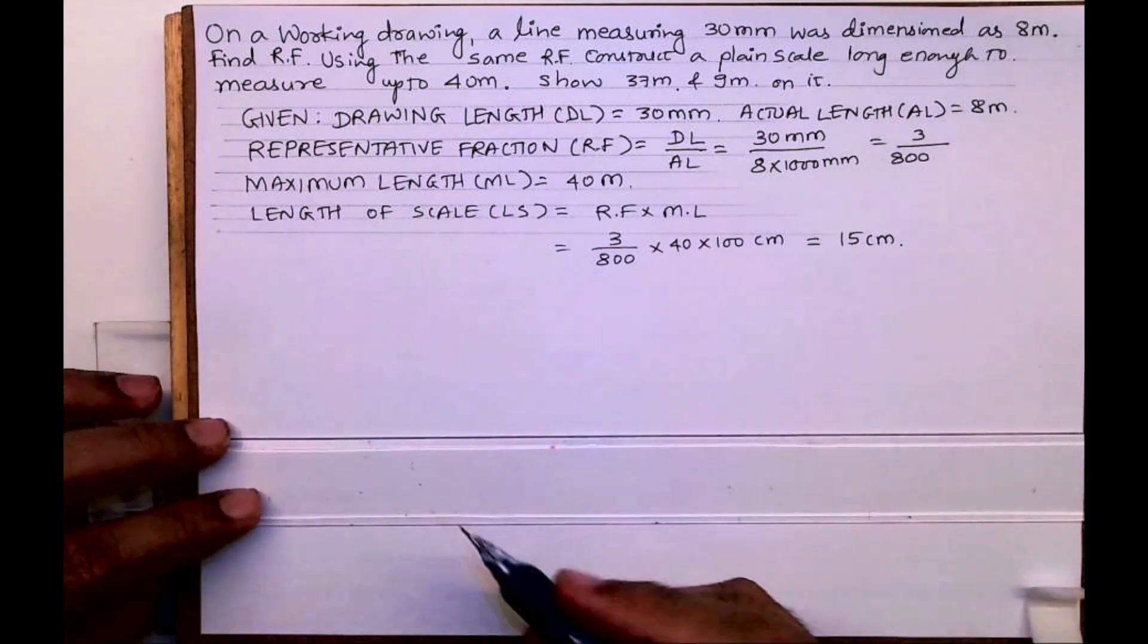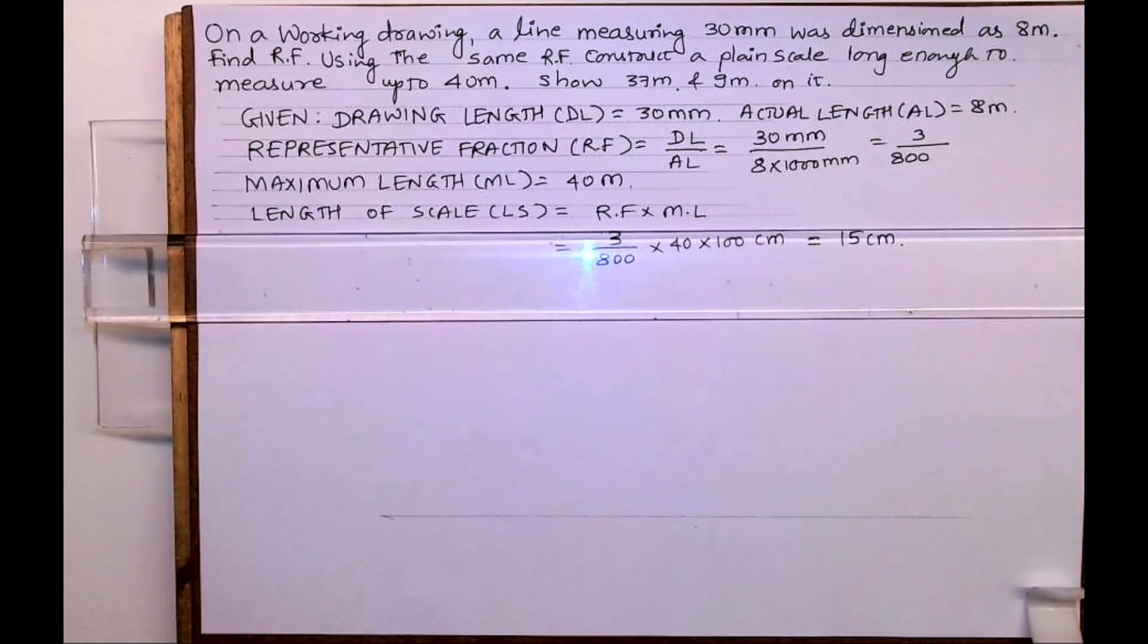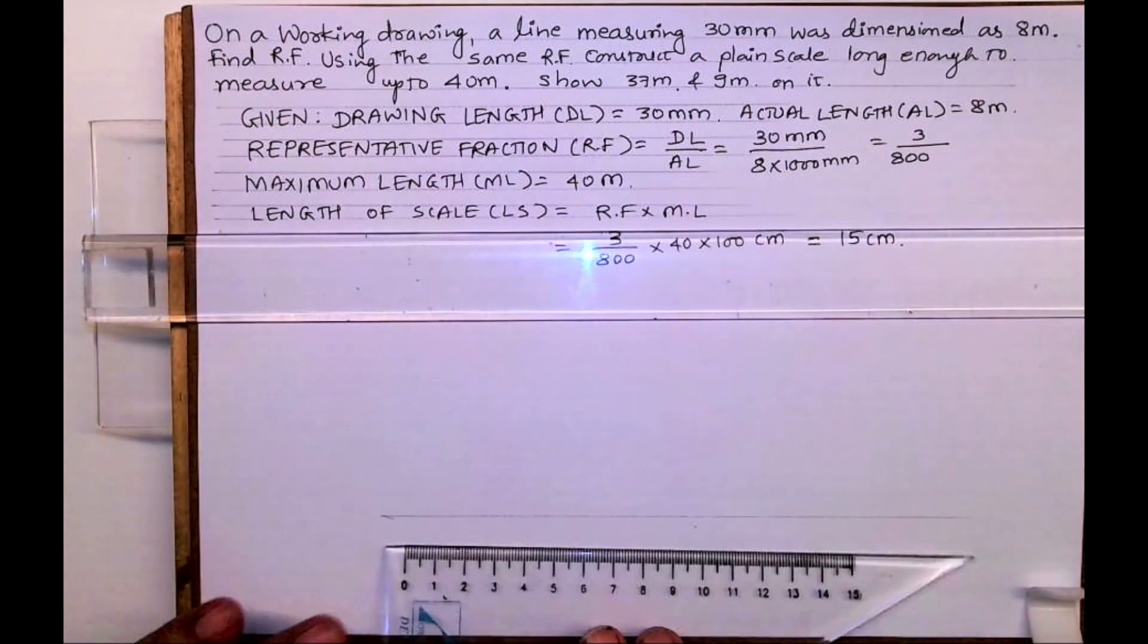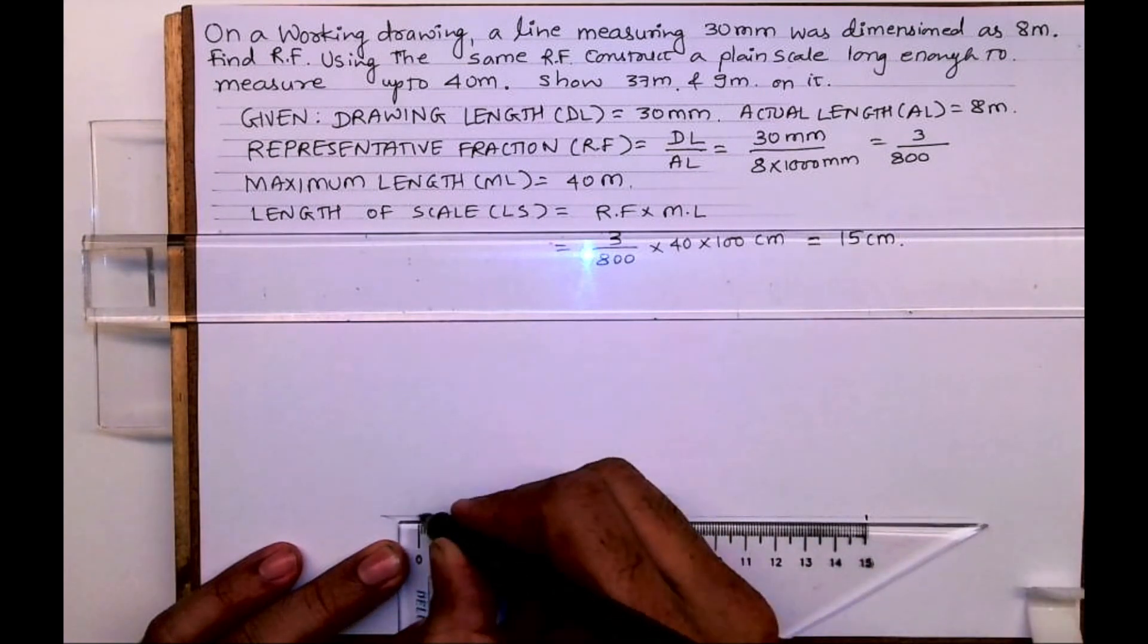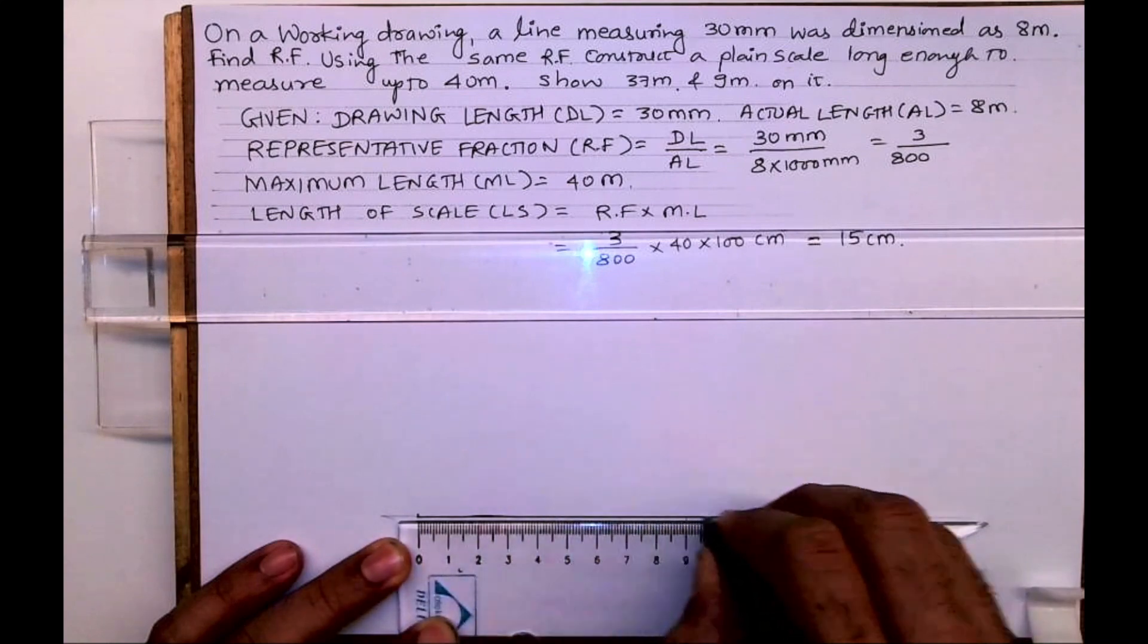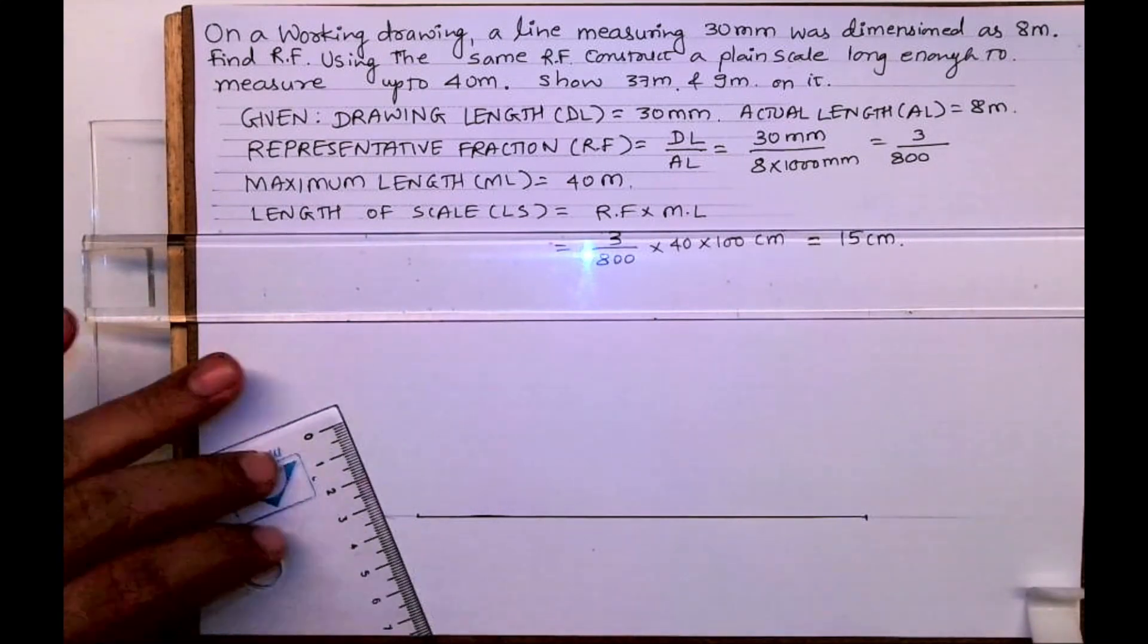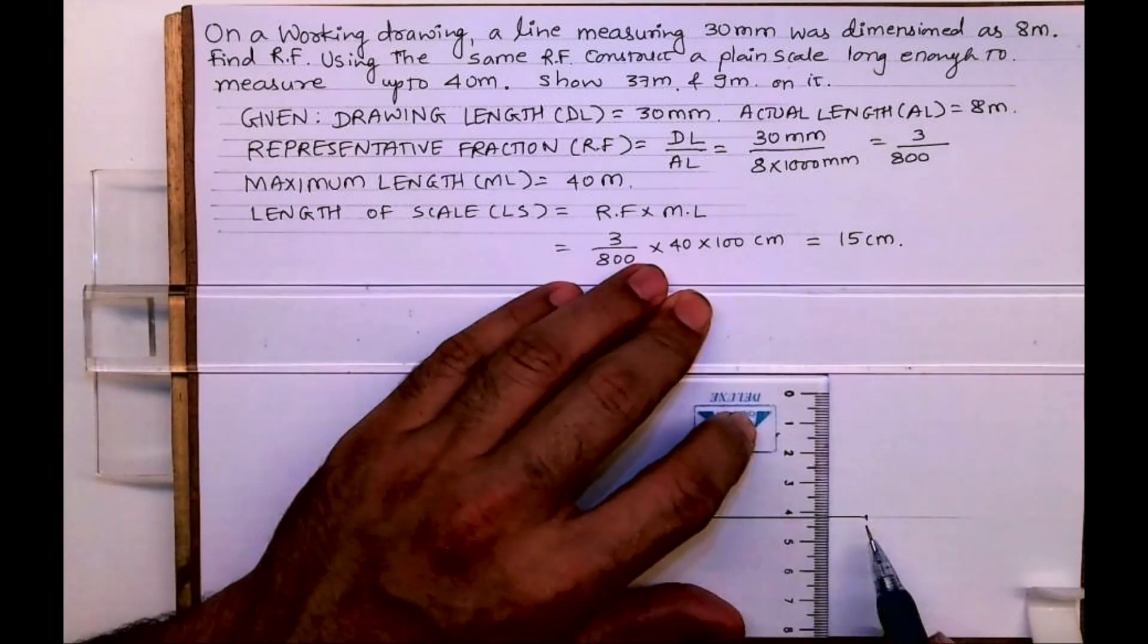So I will draw a line of 15 centimeter which is equal to 40 meters, and I will take height 5 millimeter. Remember one thing in plane scale you can take 5mm, 6mm, 9mm, 12mm, whatever you want.